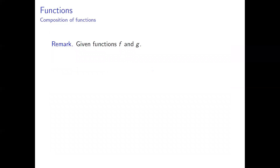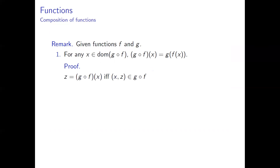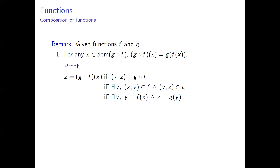Given functions f and g, for any element x in the domain of the composite function gf, the image of x under gf is g(f(x)). Indeed, z equals the image of x under gf if and only if the ordered pair (x, z) is an element of gf, if and only if for some object y, (x, y) is an element of f and (y, z) is an element of g, if and only if y equals f(x) and z equals g(y), if and only if z equals g(f(x)).